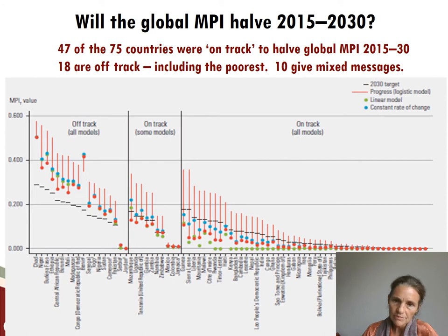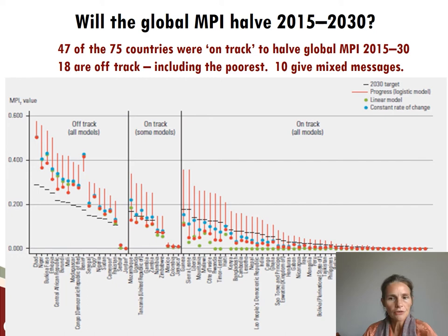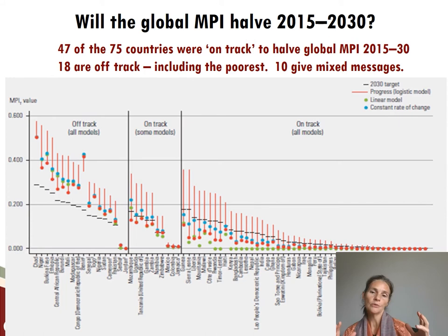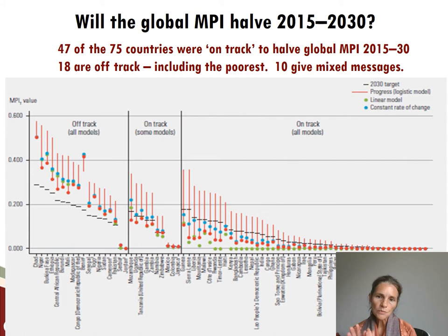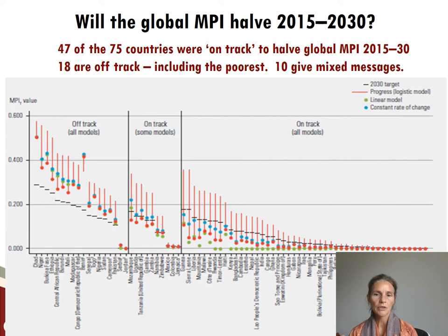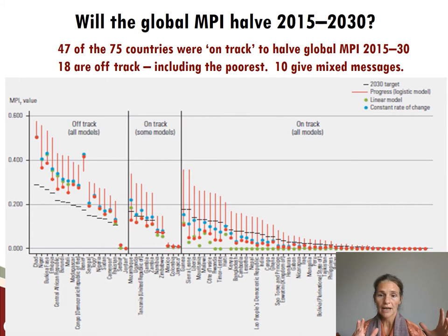What do we know going forward? Ricardo Nogales, Natalie Quinn, and Nicolai Spahe analyzed how many of the 75 countries, if present trends continue, would be on track to cut the Global MPI by half between 2015 and 2030 — the SDG period. Using linear, constant relative, and logistic models, 47 countries are on track to cut their MPI by half if present trends continue. Ten countries gave mixed model answers. But in 18 countries — 14 of which are in Sub-Saharan Africa — they were off track and could not, at present trends, cut their MPI by half.